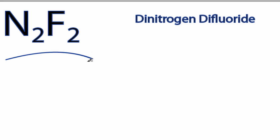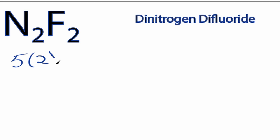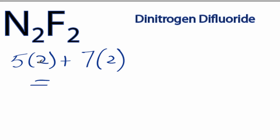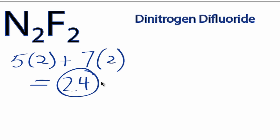This is the N2F2 Lewis structure. Nitrogen has 5 valence electrons and we have 2 of them. Fluorine has 7, and we have 2 fluorines, so 10 plus 14 gives a total of 24 valence electrons.